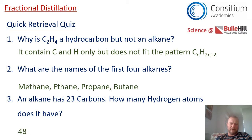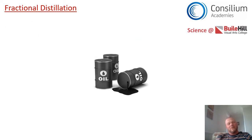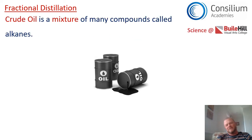Well done if you got those right. If you were scratching around, or if you haven't seen video one, you really should watch video one before we move on. So what do we know about crude oil? It's a mixture of many different compounds called alkanes. Using our mnemonic, the first four are methane, ethane, propane, and butane, but there are many more alkanes in that mixture. Although you don't need to know their chemical names, you do need to recognize their everyday names.